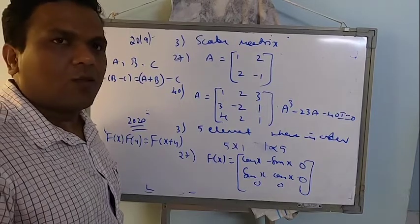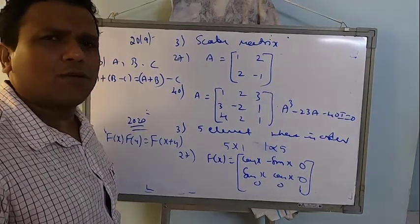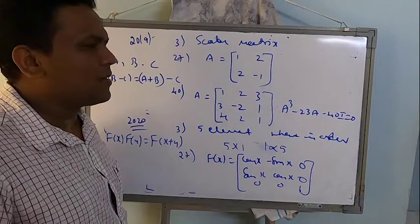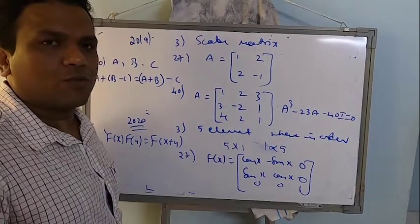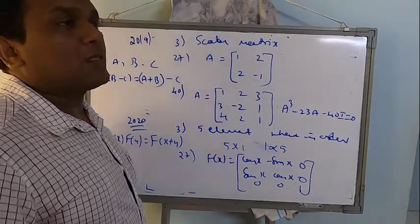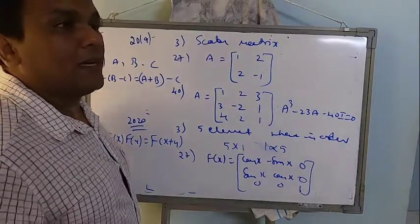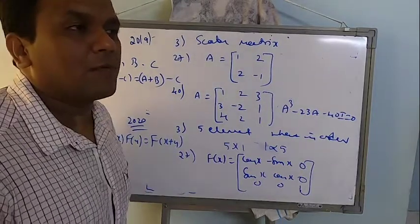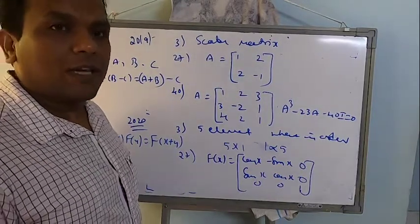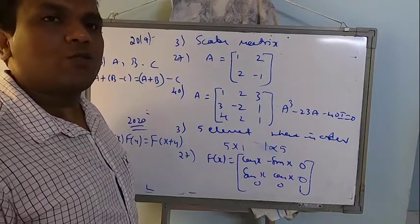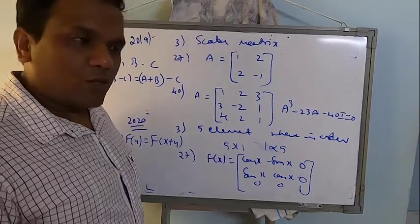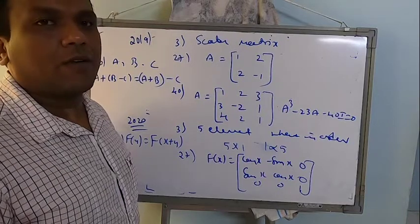For 3 mark, what are the things we can expect? One thing is, 90% is fixed for finding the inverse by elementary transformation. Otherwise, some standard properties, some standard problems which I have already explained. And for 5 mark, you know, there are hardly 4 to 5 problems which will be asked for 5 mark. You just need to sit and practice those. But to come to such an extent that, okay, let me eliminate this thing, let me eliminate this concept, let me eliminate this problem and study, still I will be able to score. First thing is, you study the full chapter. Make sure you are thorough with the chapter.